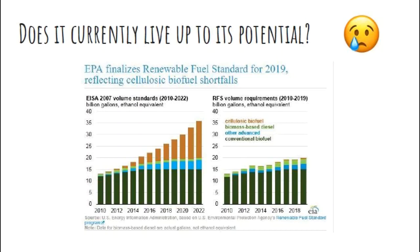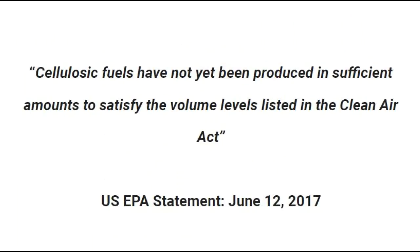Even though legislation set out for 100 million gallons to be produced starting in 2010, the 1 million mark wasn't reached until 2015, with the 10 million mark being reached in 2017. Despite all the startup funding from the government, it seems as though many cellulose ethanol companies cannot sustain themselves economically on their own, and so currently, cellulose ethanol does not live up to the hype.